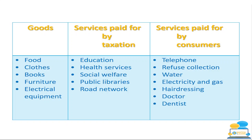Services paid for by taxation include education — teachers' wages come out of the taxes your parents or guardians pay. Health services include vaccines, hospital appointments, and prescriptions. Social welfare covers things like the pandemic unemployment benefit during COVID and job seekers' allowance. Everyone in Ireland with a child up to age 18 receives children's allowance. Public libraries and roads and pathways are also funded through taxes — the county council looks after them through taxation.